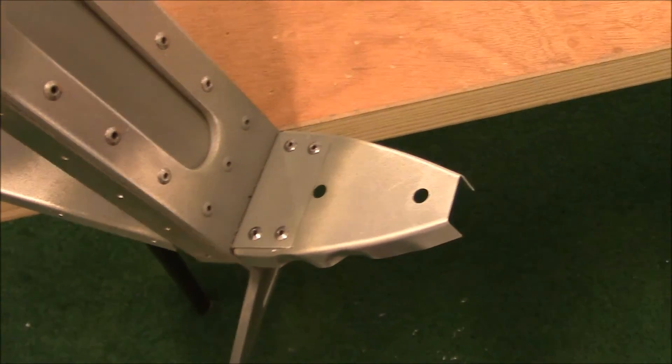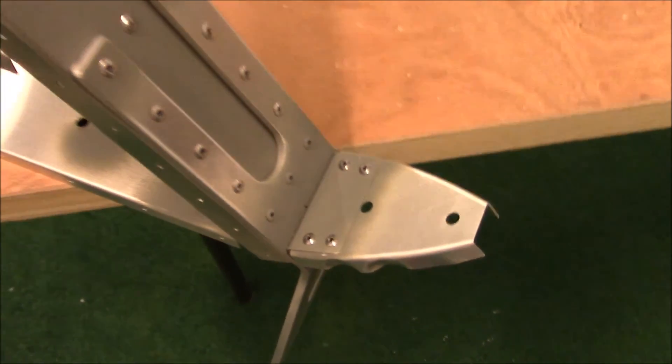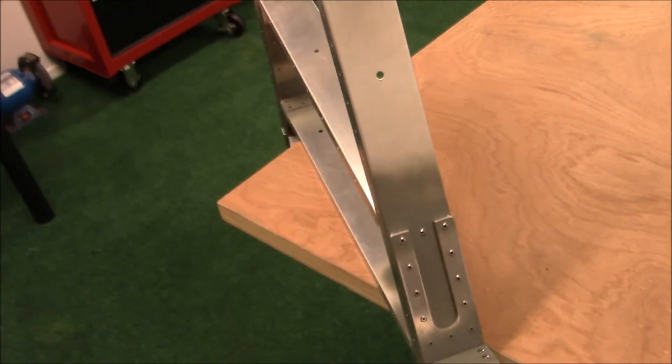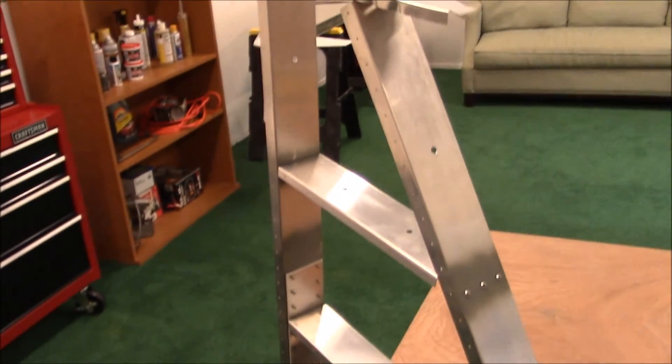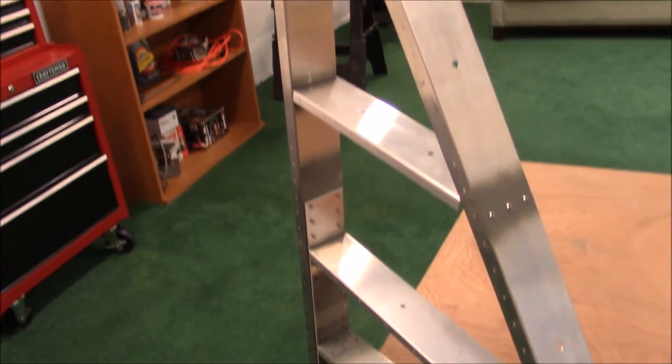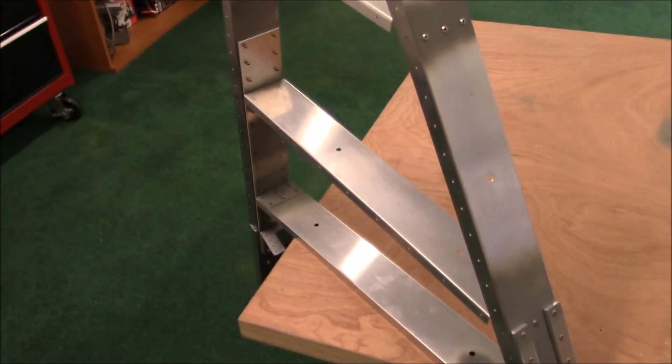I went ahead and quickly drilled up this extra tip piece here on the bottom of the vertical. I'm going to put the skin on and start drilling up the holes and getting it ready to dimple die for the outside of the skin.